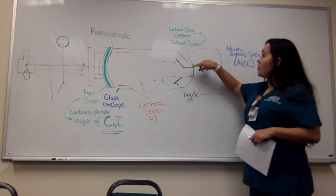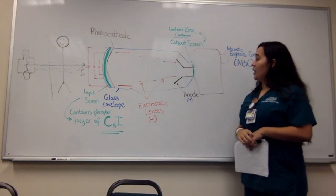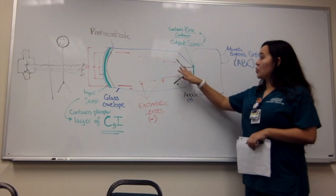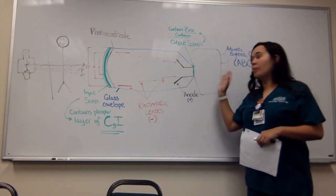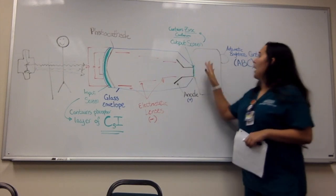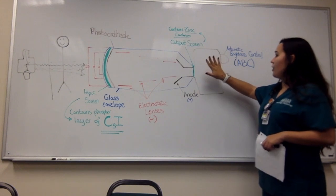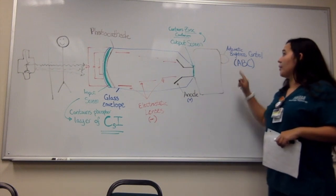The output screen contains a layer of zinc cadmium. This is where the electrons are then converted into light photons once again, and it goes into the tower, which contains automatic brightness controls.